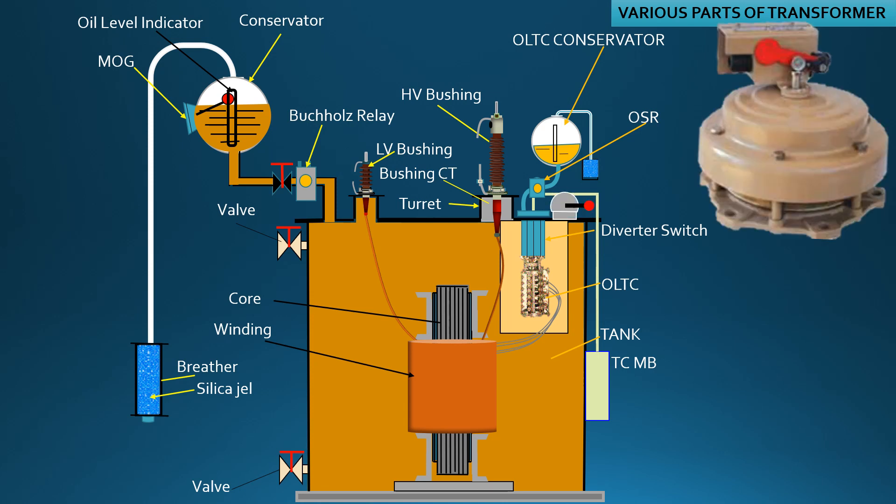This is PRD or PRV, pressure release device or pressure release valve. Heated oil and gas is released from the tank through the device when suddenly heavy fault occurs inside the transformer. It acts like a pressure cooker release valve.